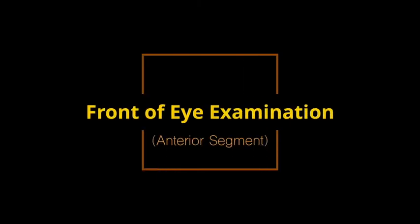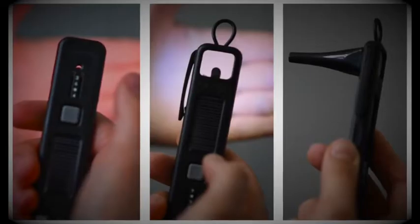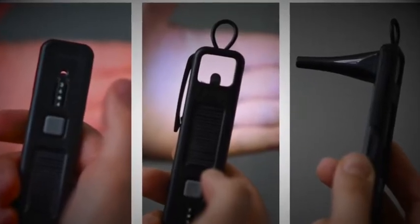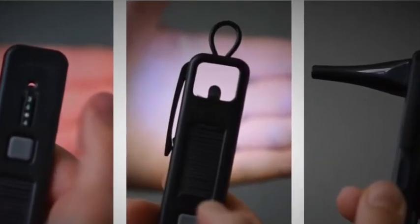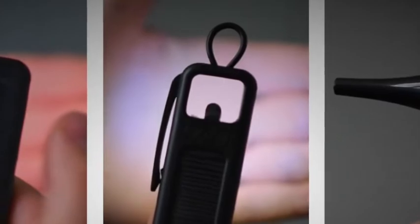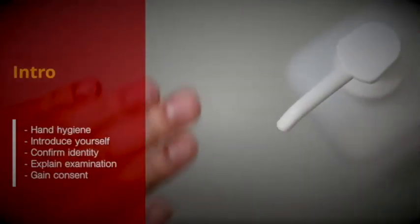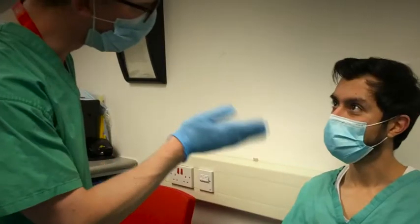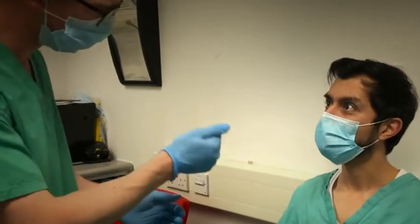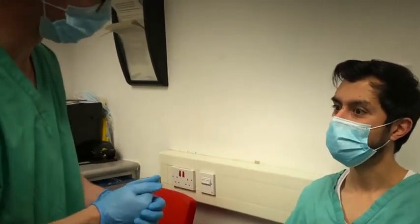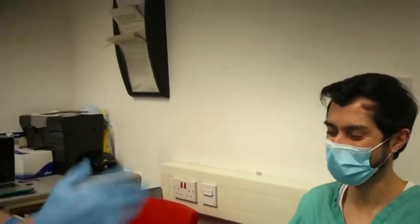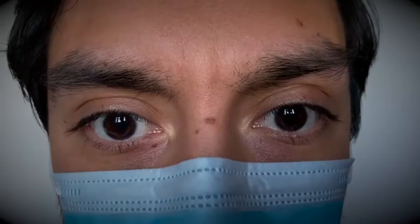This video demonstrates how to perform a front of the eye examination using the anterior segment loop of the ArcLight device. Start with hand hygiene and introduce yourself. Confirm the identity of the patient, explain the examination and gain consent to perform it.